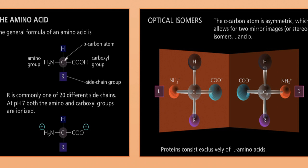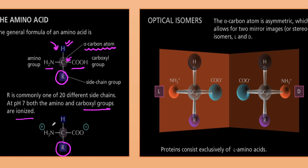Here the basic structure of an amino acid is shown: this is the side chain, this is NH2, this is COOH, and this is the hydrogen. This is the alpha carbon atom. R is commonly one of 20 different side chains. At pH 7, both the amino group and the carboxyl group are ionized — so the NH2 becomes NH3+ and the COOH becomes COO minus.